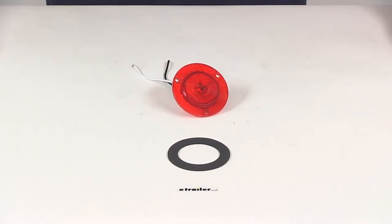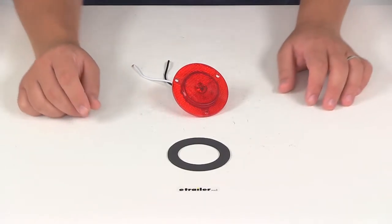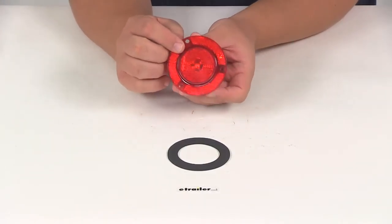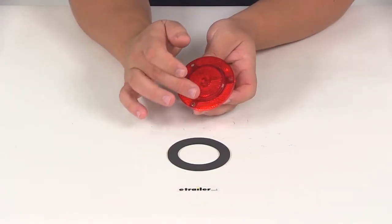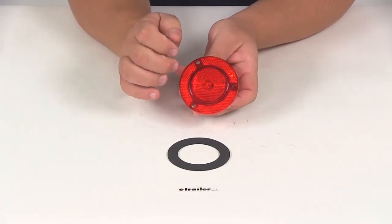Today we're taking a look at part number MCL52RHXB. This is the Optronics LED clearance or side marker light. It has a built-in reflux reflector here on the mounting flange and over the main portion where the lights are.